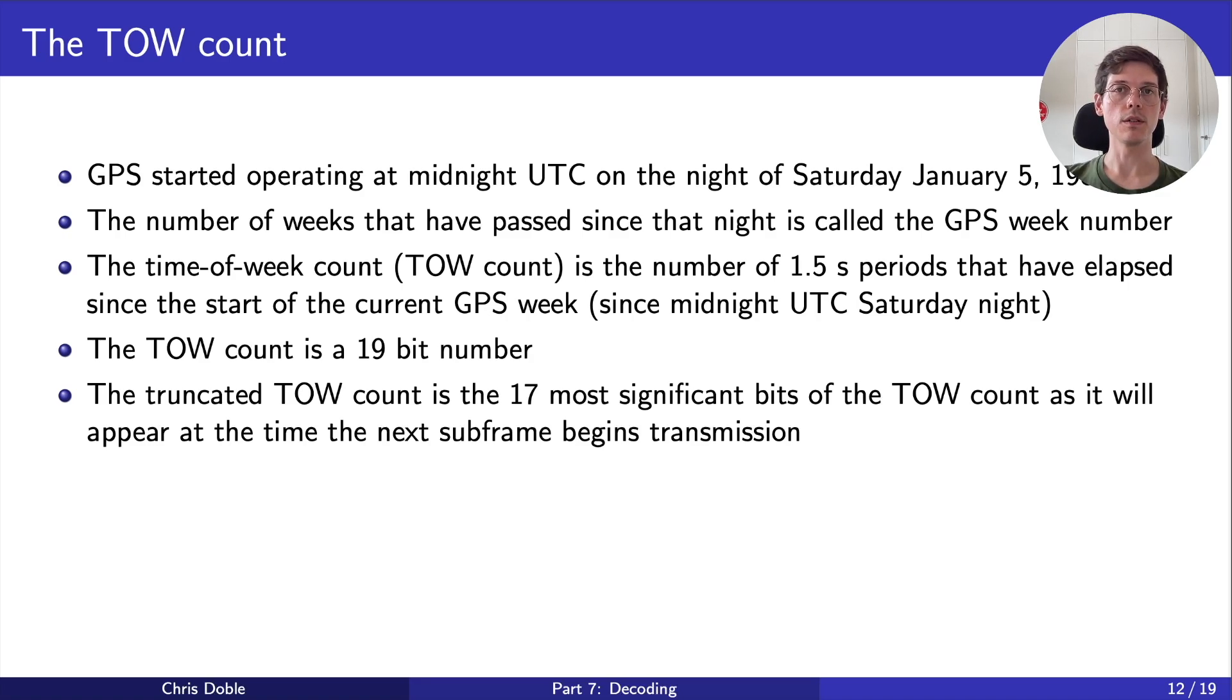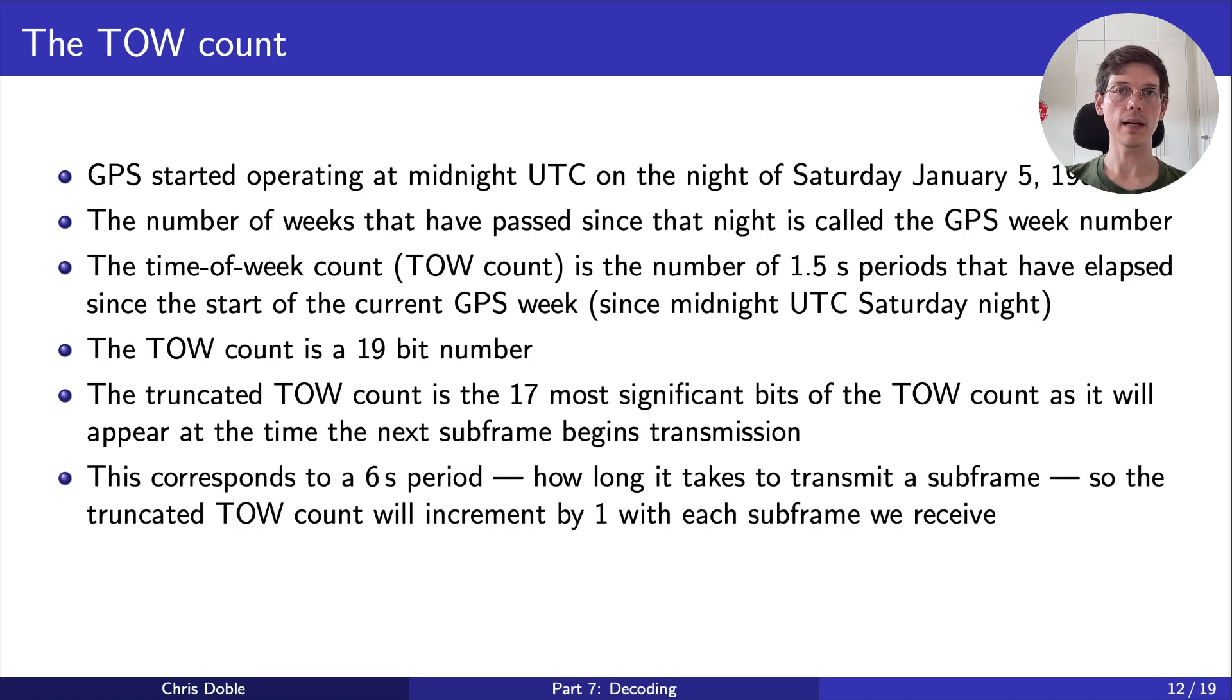The third least significant bit, which is transmitted, is twice that again, a 6 second period. This happens to be exactly how long it takes to transmit a subframe. That means the truncated TOW count will increment by 1 with each subframe we receive. That's a pretty clever way to minimise the amount of data you need to transfer.